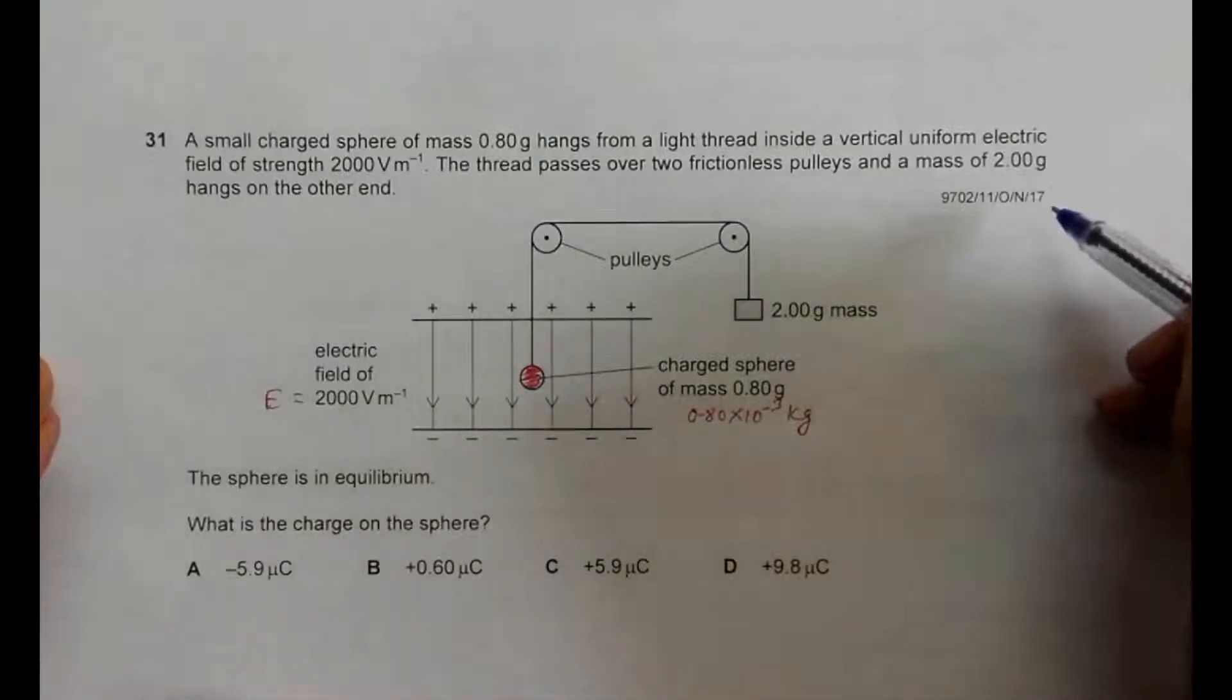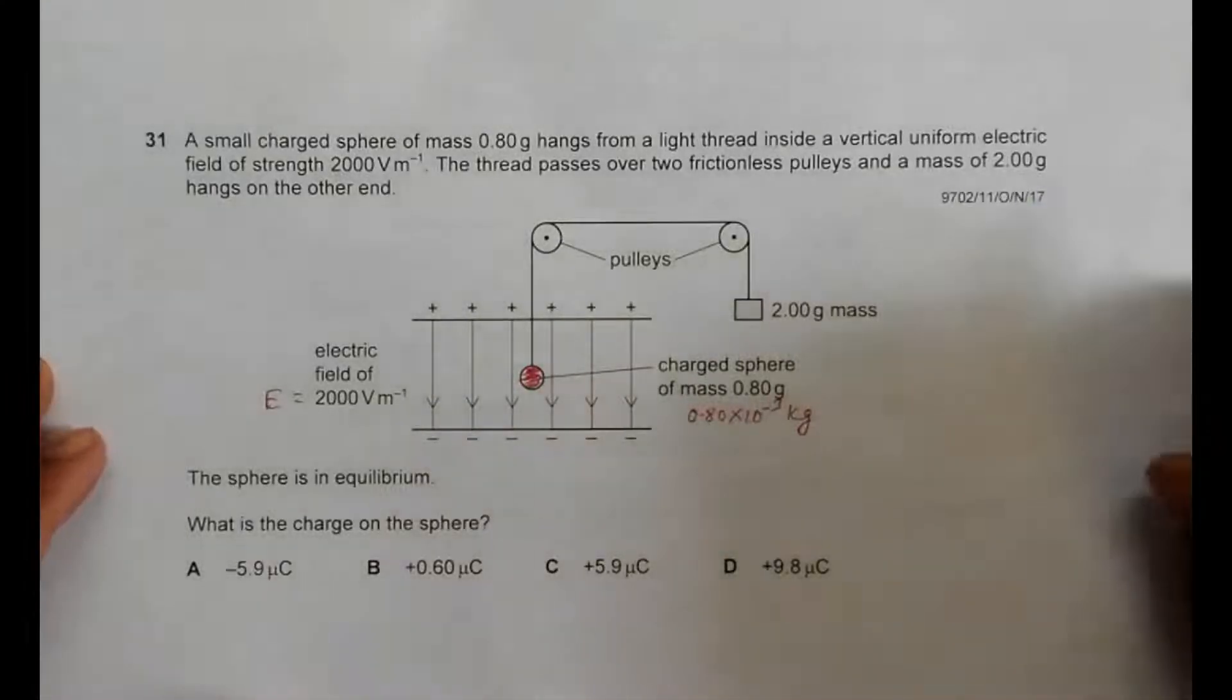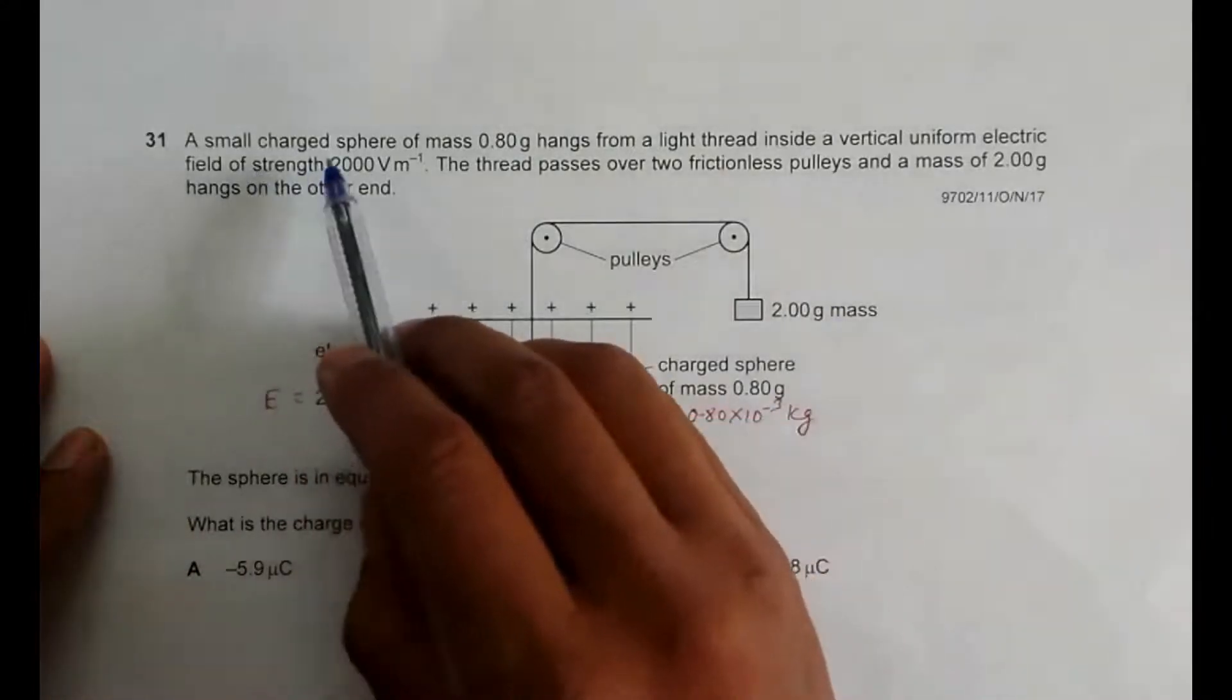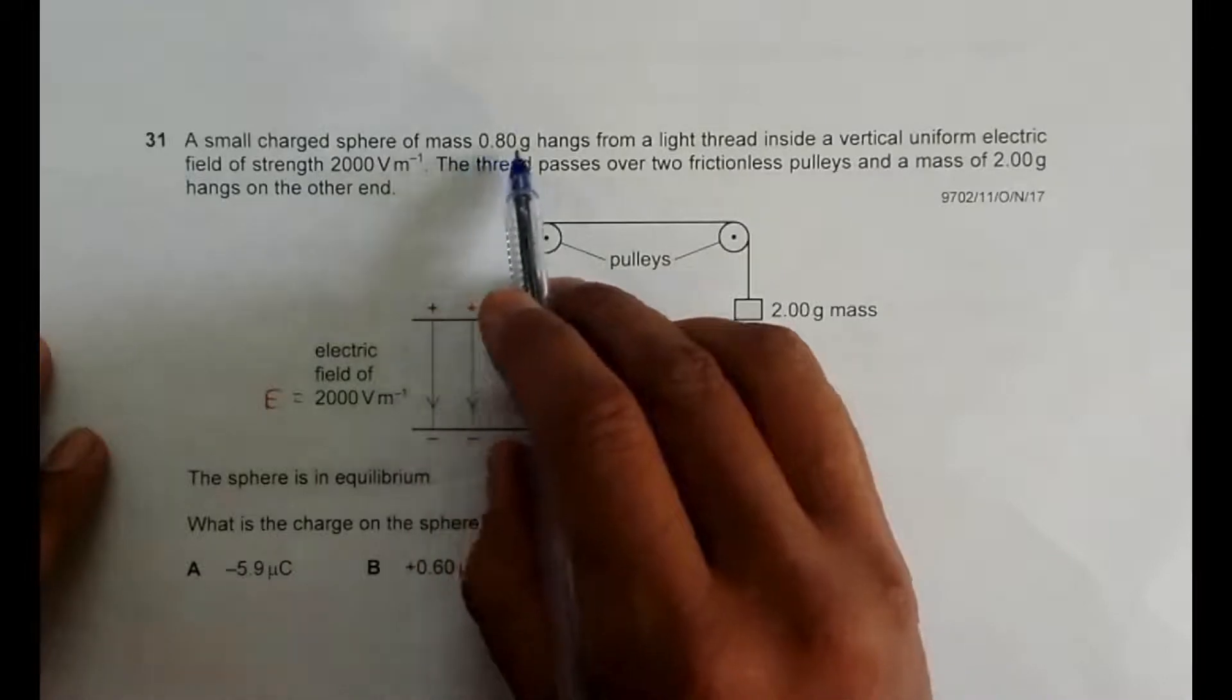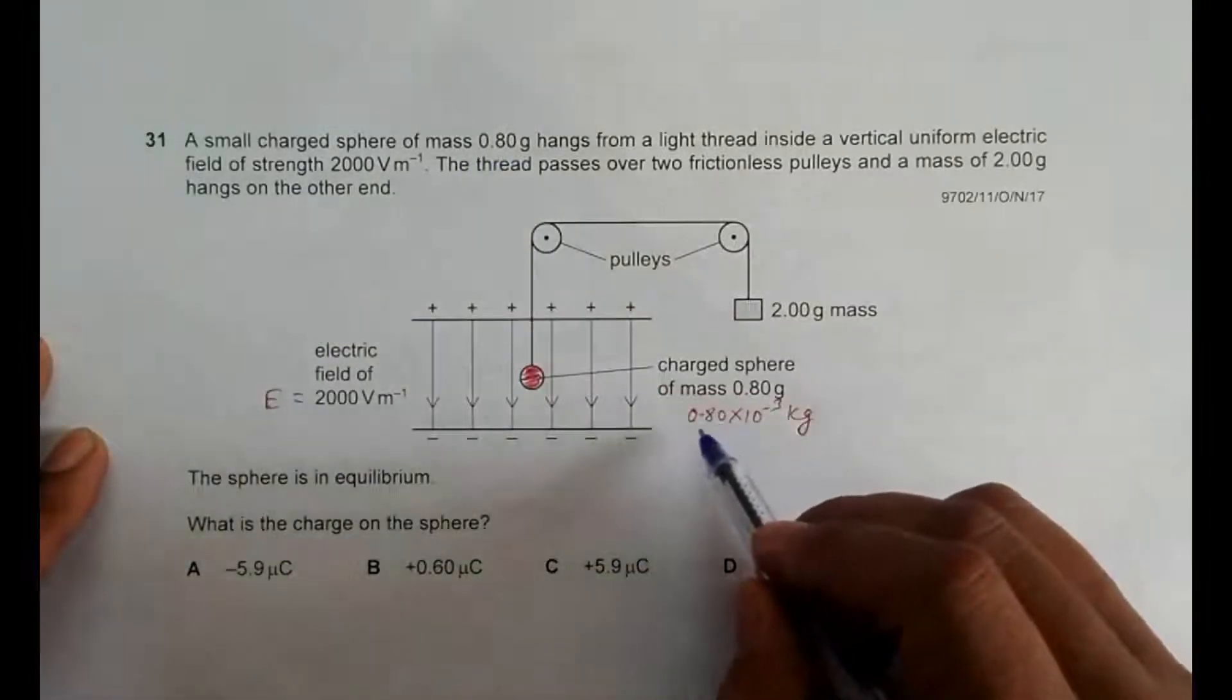This is the question from 2017 October November Paper 1, question number 31. It says a small charged sphere, here we have the sphere of mass 0.80 grams, so I have studied it as 0.80 into 10 to the power minus 3 kilograms.